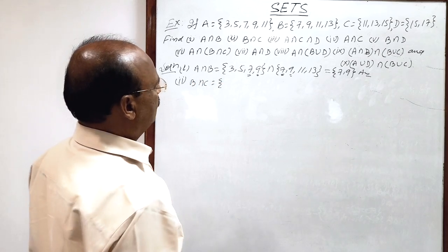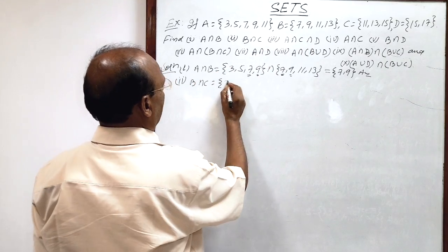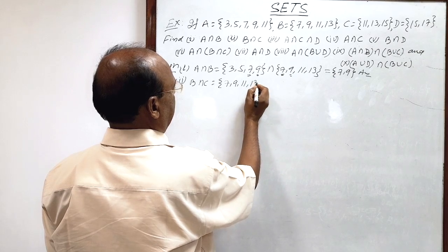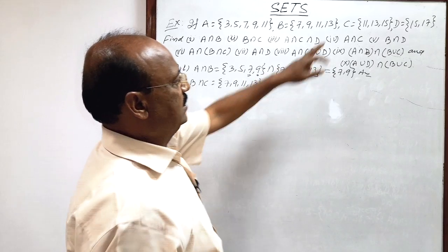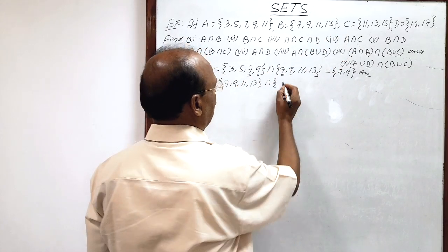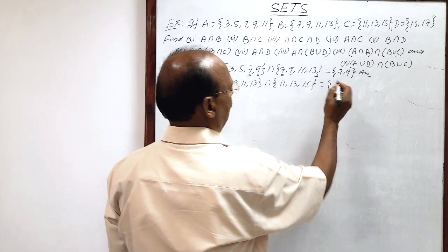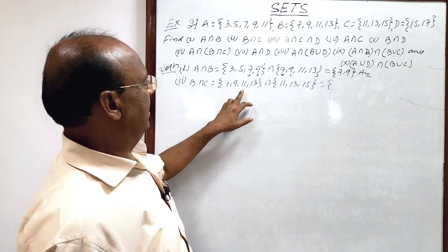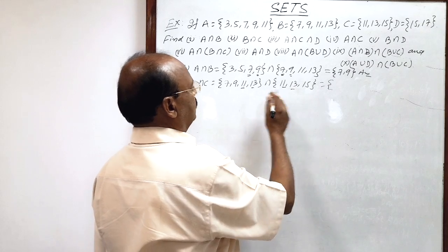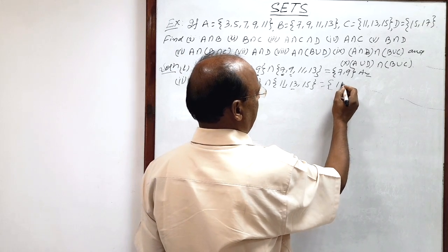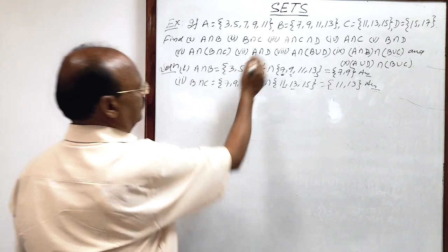Now the second part: B intersection C. Set B has elements 7, 9, 11, 13 and set C has elements 11, 13, 15. We collect the common elements from both sets. 11 is common and 13 is common. So B intersection C = {11, 13}. This is the answer.